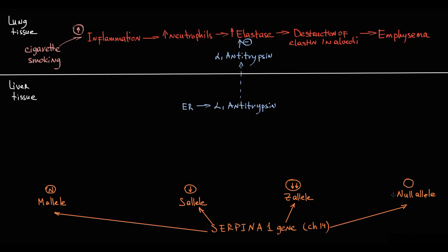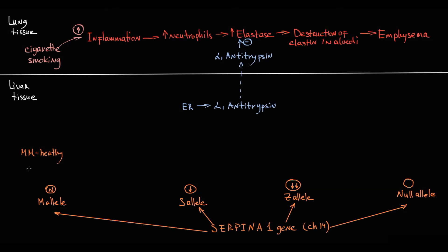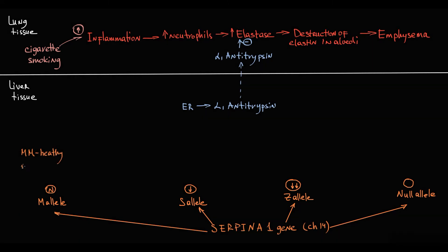A person has one allele from each parent. A healthy individual has two M alleles — this results in totally normal antitrypsin production, and it is the most common combination. People with MS and MZ variants have slightly decreased antitrypsin production.